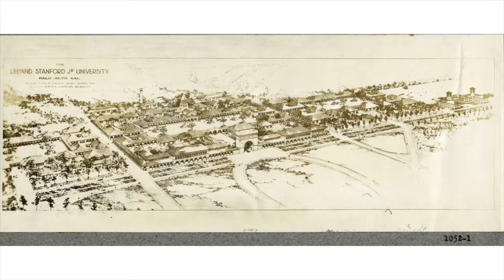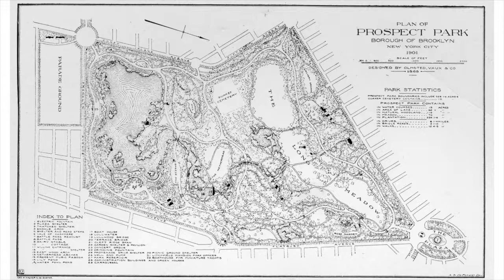Olmstead was prolific. There are hundreds of projects to his credit, including hundreds more to his firm's name, which was carried on after his death in 1903 by his two sons — John Charles Olmstead, whom he adopted, and his natural-born son Frederick Law Jr. With all this work to his credit, the question becomes: what can we take away and apply to City Skylines? I thought about this a lot and came up with two things.